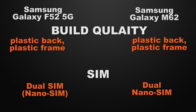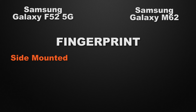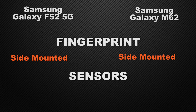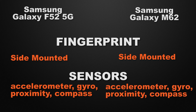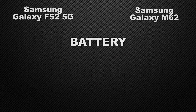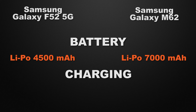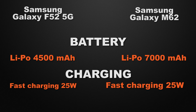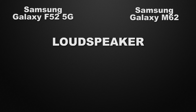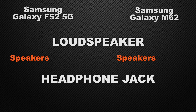About build quality, both the F52 and M62 have a plastic back with a plastic frame, though the M62 is considered to have a solid build quality. Both devices have dual nano-SIM support, so it's a tie. Moving to important features, both the F52 and M62 have a side-mounted fingerprint scanner, so it's a tie. Both devices also have accelerometer, gyroscope, proximity, and compass sensors, so it's a tie. Talking about battery capacity, the F52 has 4500mAh whereas the M62 has a massive 7000mAh, so the winner is the M62.